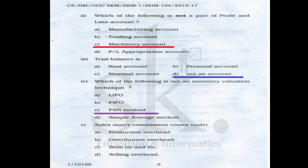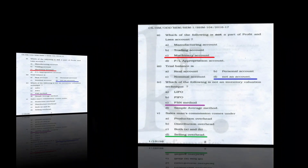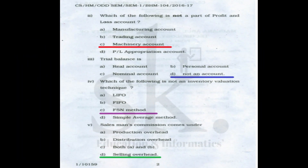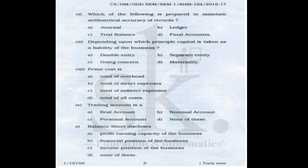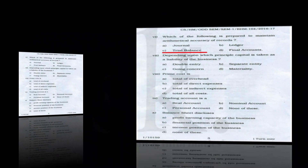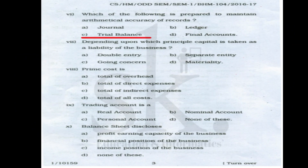Question number five: salesman's commission comes under selling overhead, so the correct option is D. Question number six: which of the following is prepared to maintain arithmetical accuracy of records — the correct option is trial balance, since its main objective is mathematical accuracy of the books of accounts.